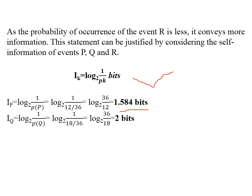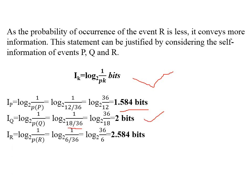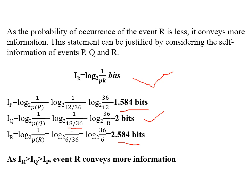Calculating self-information: I(P) = log₂(36/12) = 1.584 bits; I(Q) = log₂(36/18) = 1 bit — wait, that gives log₂(2) = 1 bit, actually noted as approximately 1 bit. I(R) = log₂(36/6) = log₂(6) = 2.584 bits. Since R had the least probability, it conveys the most information. We can mathematically prove that I(R) > I(Q) > I(P).